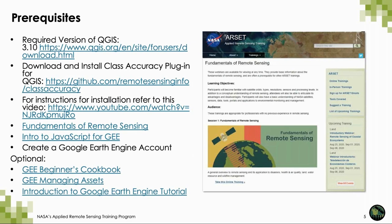There are several prerequisites posted on the RSET website for this course. If you don't already have it, you will need to download version 3.10 of QGIS. You will also need to download and install the class accuracy plugin for QGIS through the provided link, and we have instructions for download available on the RSET website. We also recommend the fundamentals of remote sensing and intro to JavaScript for Google Earth Engine. Since we will be diving in quickly to coding in Google Earth Engine, I will be covering a brief review, but we will not go into it extensively.